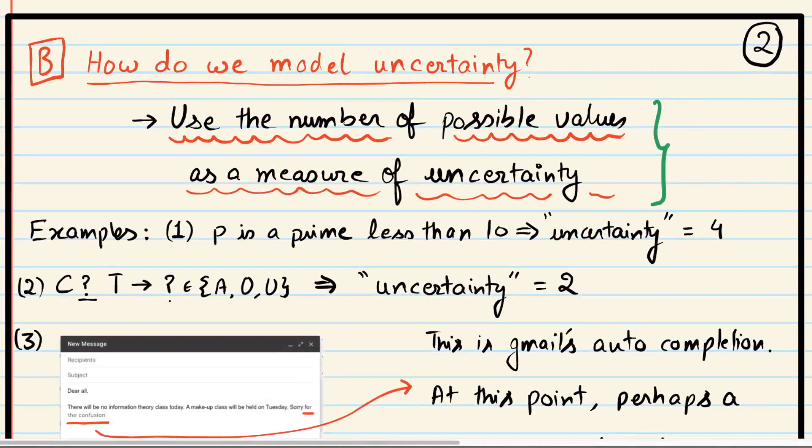How do we model uncertainty? How do we measure uncertainty? That is the question we now have to answer, because we decided that for us information will be reduction in uncertainty. One possible, very simple answer is we simply use the number of possible values in a guess list as a measure of uncertainty. So when a question is raised, you have a guess list of answers, and the size of that guess list is a measure of uncertainty.